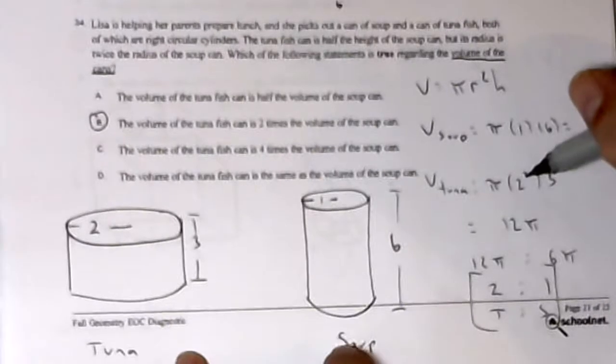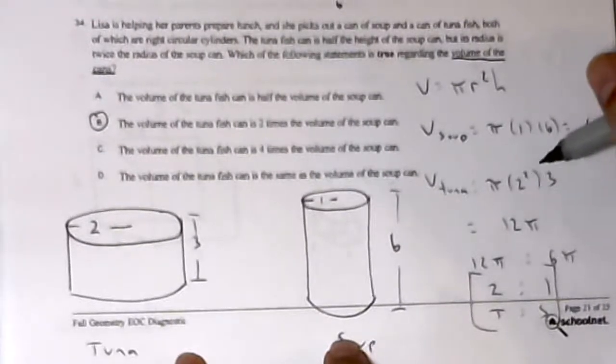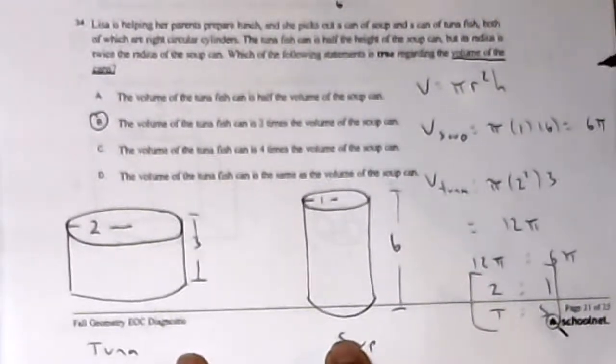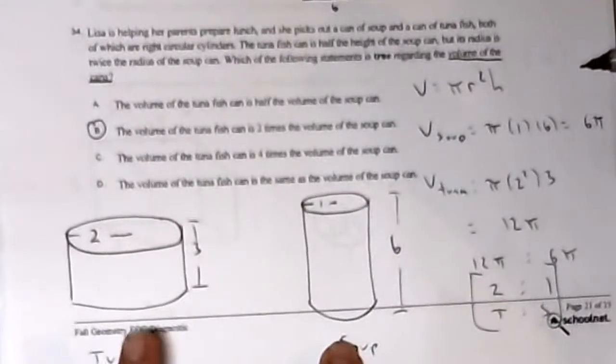So the volume of the soup will be pi r squared h, pi times 1 squared is 1, times 6 is 6 pi. For the tuna, it's pi r squared h, 2 squared is 4, times 3 is 12 pi. So the volume of the tuna is twice the volume of the soup.